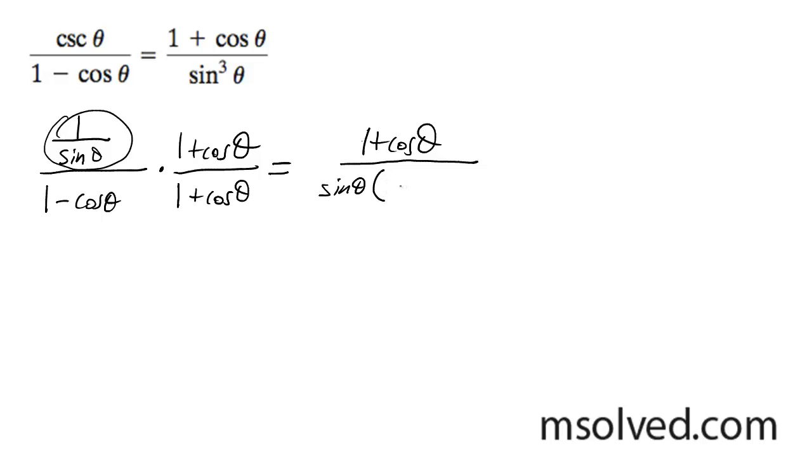And then 1 minus cosine theta times 1 plus cosine theta ends up being 1 minus cosine squared theta. So I end up with this: 1 plus cosine theta. And this whole portion right here is the equivalent sine squared theta.